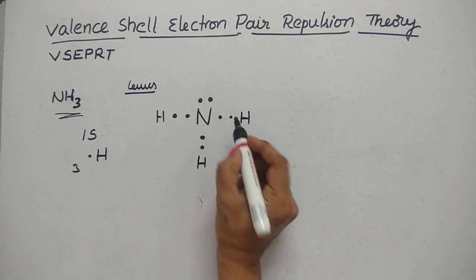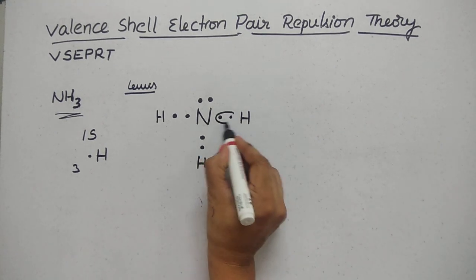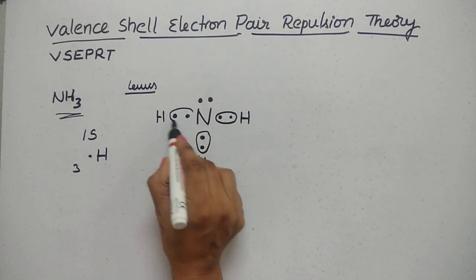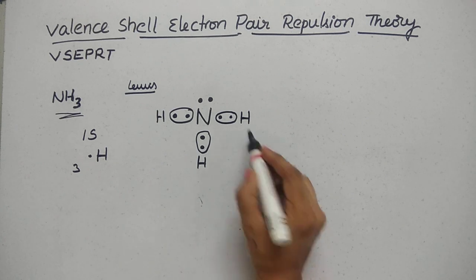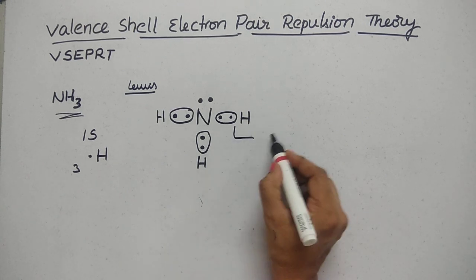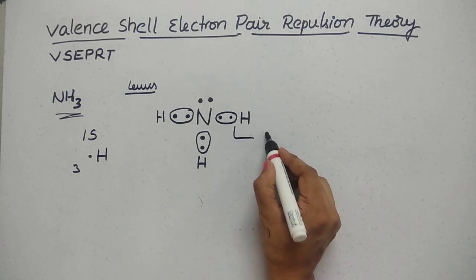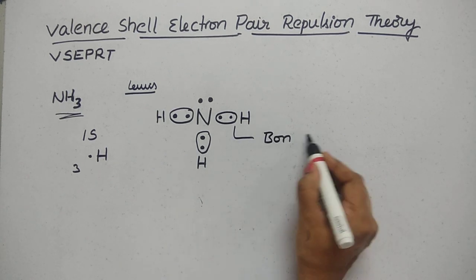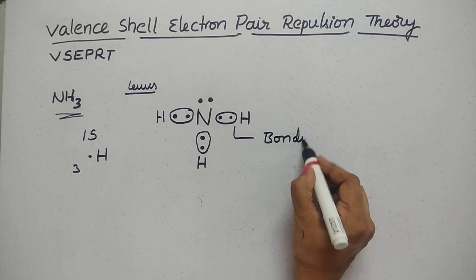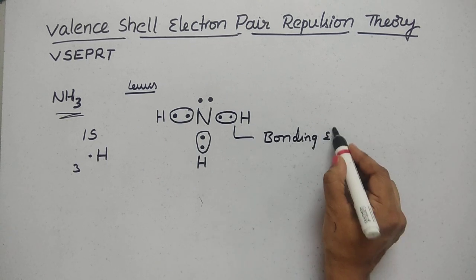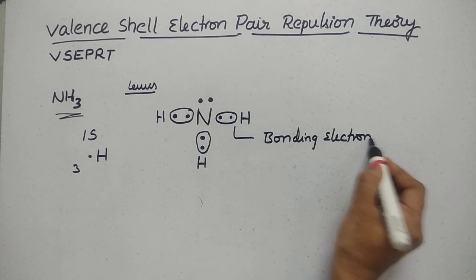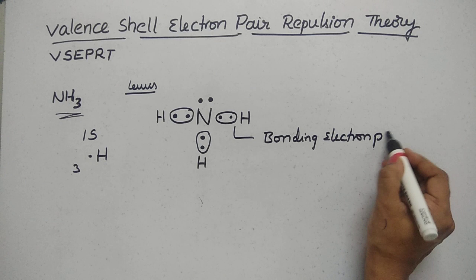Both atoms share the bond pair. This shared electron pair is called the bonding pair, or bonding electron pair. Hydrogen has the configuration 1s1, so three hydrogen atoms bond with nitrogen to form ammonia.